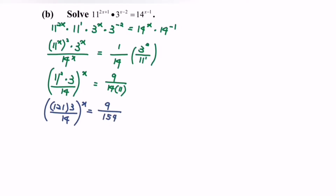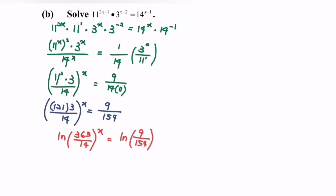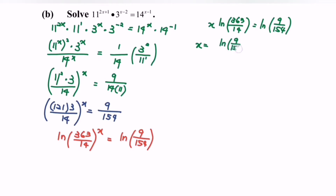So in order to find the value of x, we need to log both sides. So log of (363 over 14) to the power of x equals log of (9 over 154). Therefore, x equals log(9 over 154) over log(363 over 14).